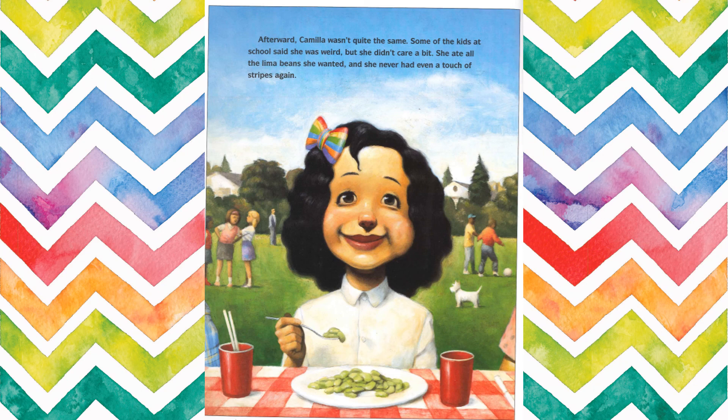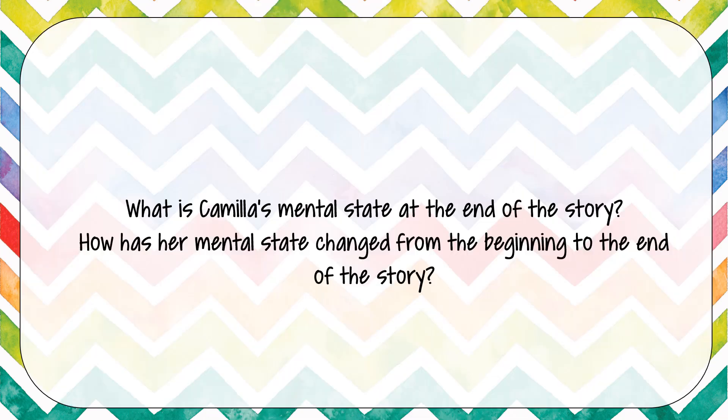Afterward, Camilla wasn't quite the same. Some of the kids at school said she was weird, but she didn't care a bit. She ate all the lima beans she wanted, and she never had even a touch of stripes again. What is Camilla's mental state at the end of the story? How has her mental state changed from the beginning to the end of the story?